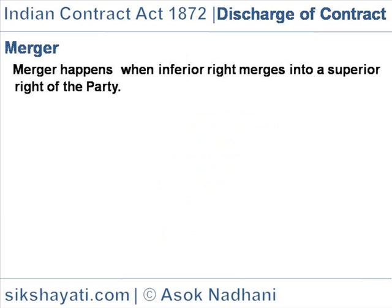Merger happens when an inferior right merges into a superior right of the party. For example, a party holding lease tenancy rights buys the property. Now the contract of lease merges into the contract of sale, and the contract of lease is discharged.